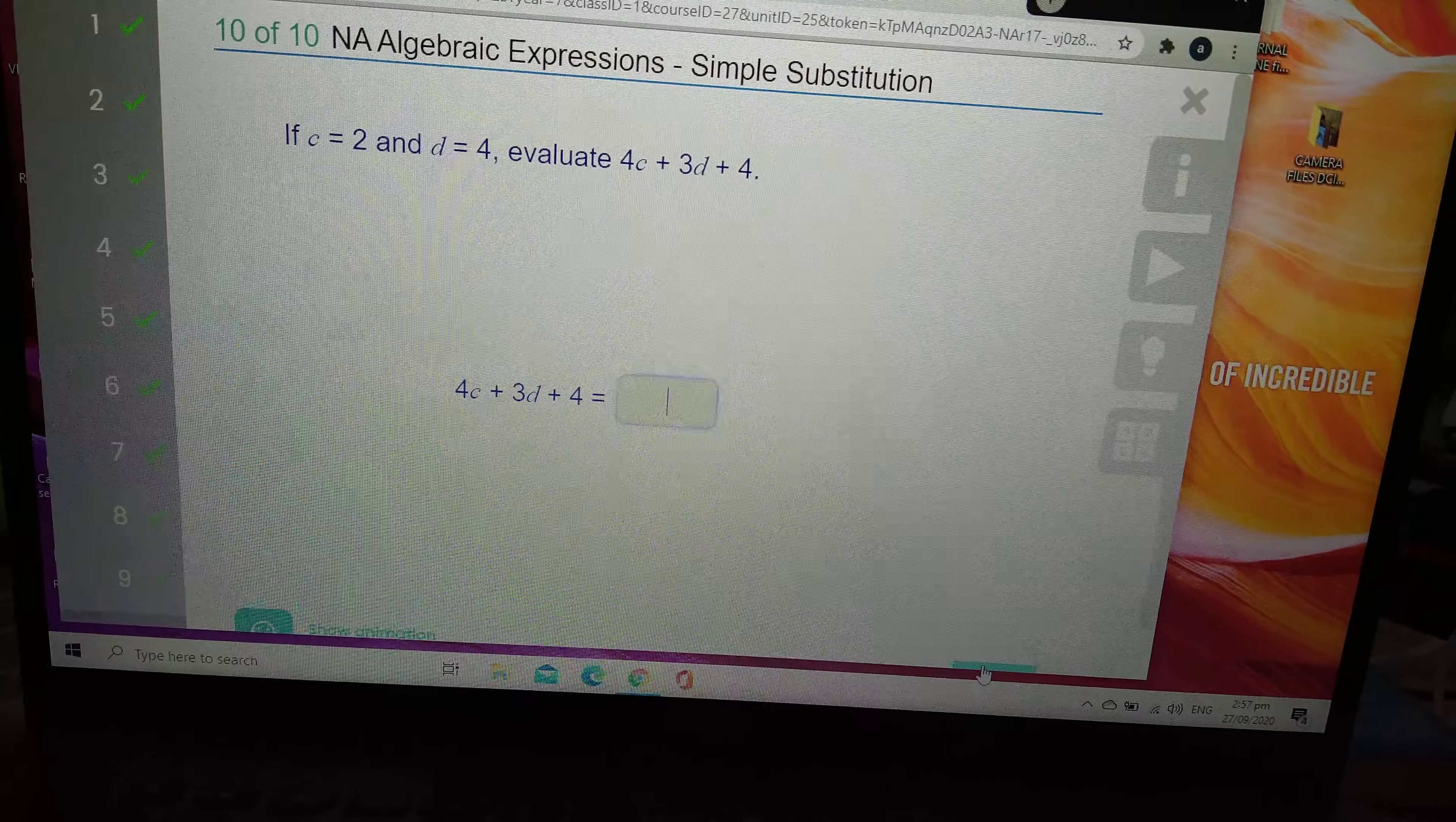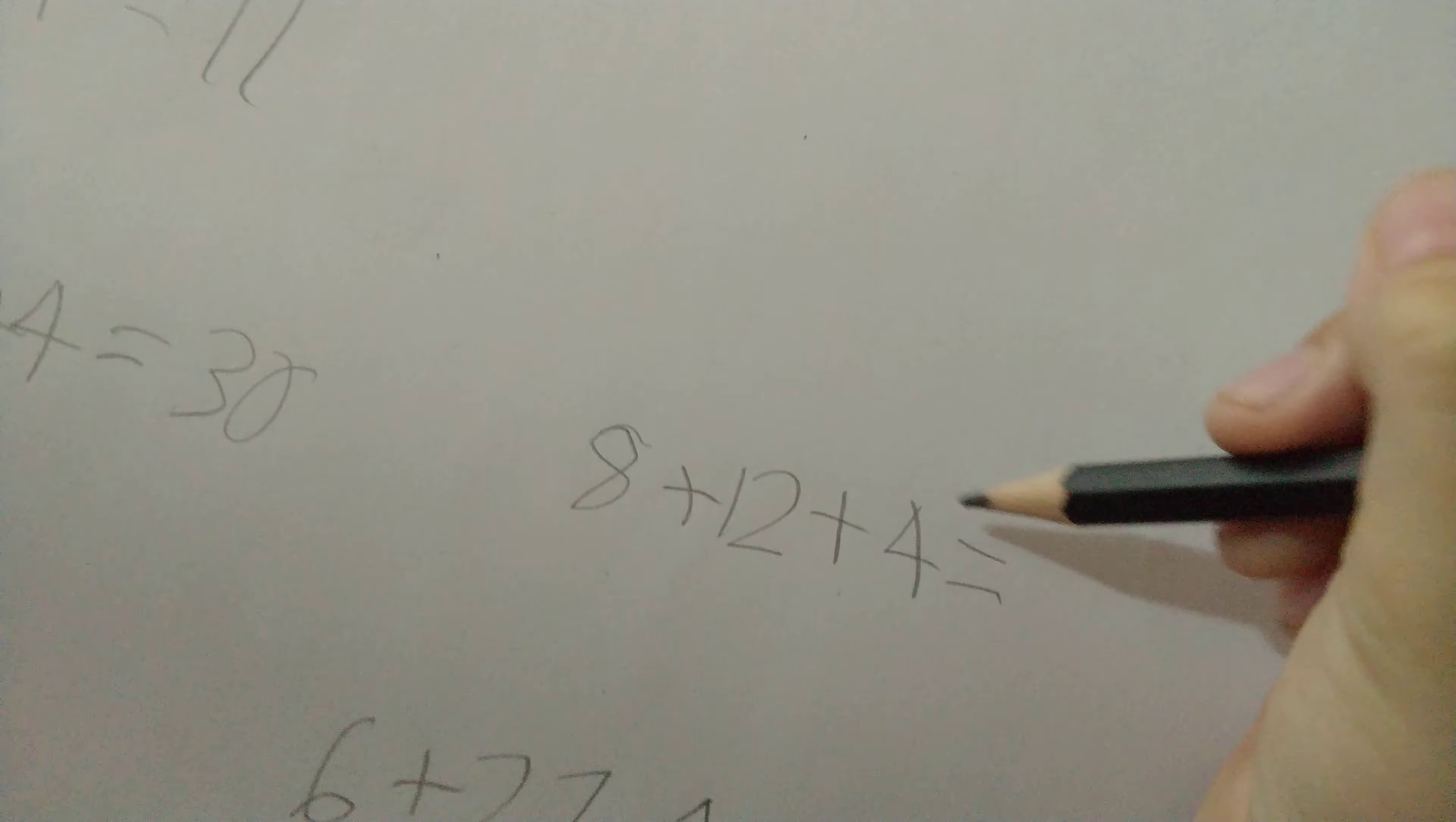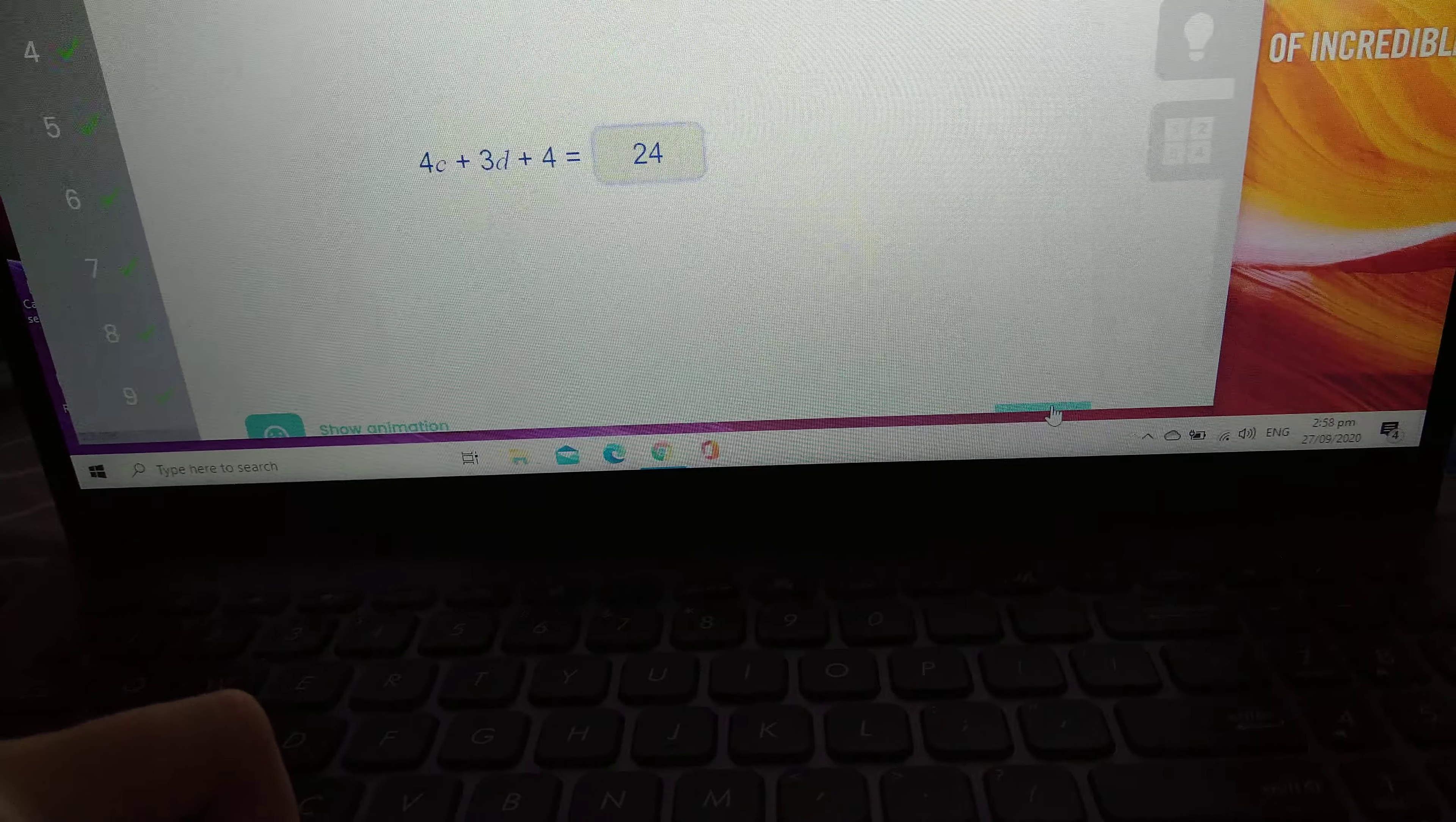I'm on number 10 now. If c is 2 and j is 4, evaluating 4c plus 3j plus 4: 4 times 2 is 8, 3 times 4 is 12, and 8 plus 12 plus 4 equals 24, from my 12 times table.